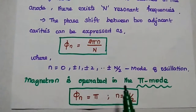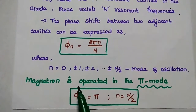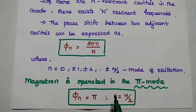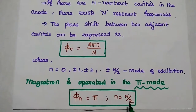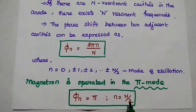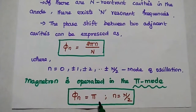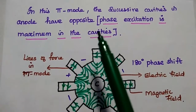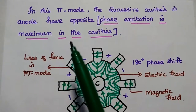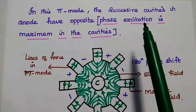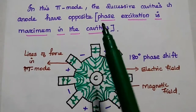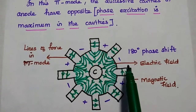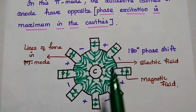Practically, the magnetron is operated in the pi mode. For the pi mode, the small n value must equal capital N divided by 2, which makes the phase shift value equal to pi. This pi mode is very important in magnetron operation because in this mode, successive cavities in the anode have opposite sign, meaning the phase excitation is maximum in the cavities. The first cavity is plus, the next is minus, alternating with a 180 degree phase shift between cavities.